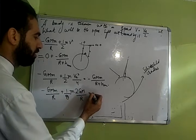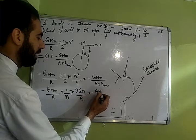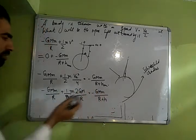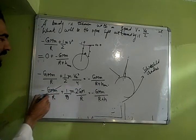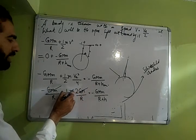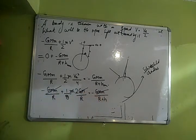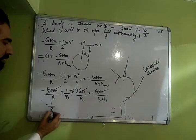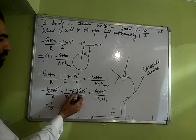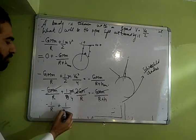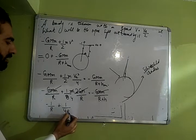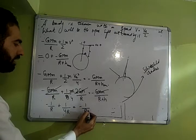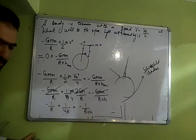Ok is equal to minus g capital M small m divided by r plus h. So beta dekho kitna simple. g capital M small m, g capital M small m, g capital M small m cancel. Ok yahan kya bacha? Minus 1 by r plus 2 by 4r, 8 plus 1 by 4r is equal to minus 1 by r plus h.